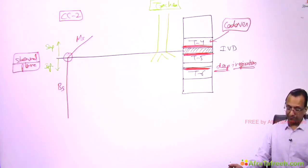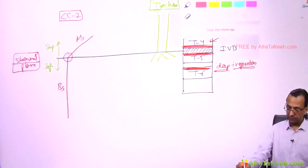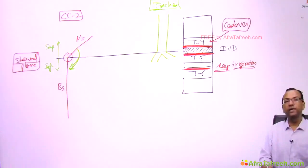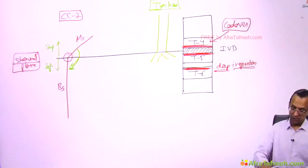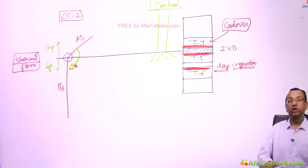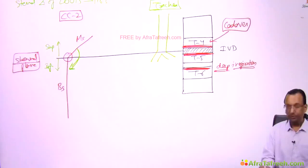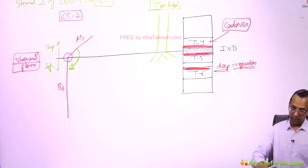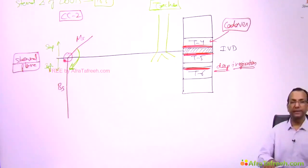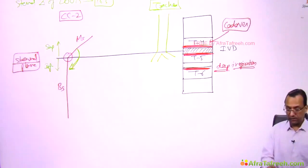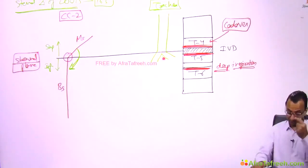Now, what about the angle between the manubrium bone and the body of the sternum? There is a sternal angle of Louis. This is the angle between the manubrium sternum and the body of the sternum. The sternal angle of Louis is 163 degrees. It is the landmark where the trachea bifurcates into two bronchi.